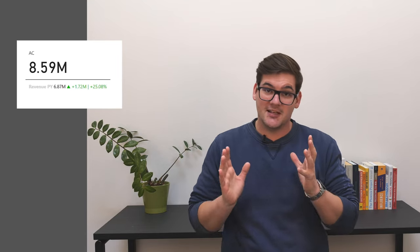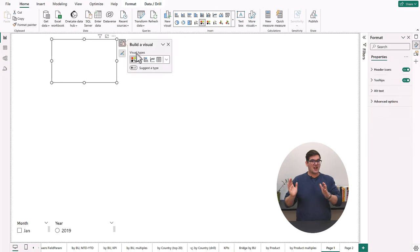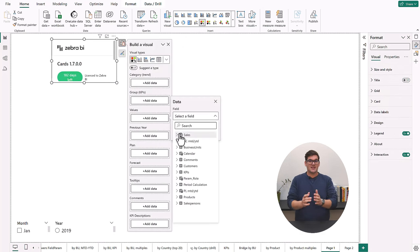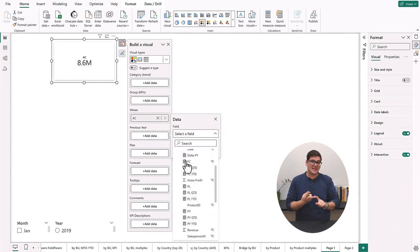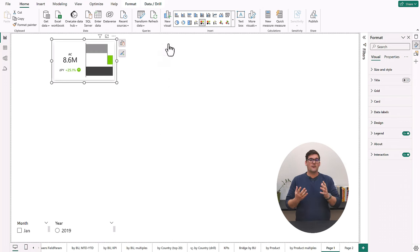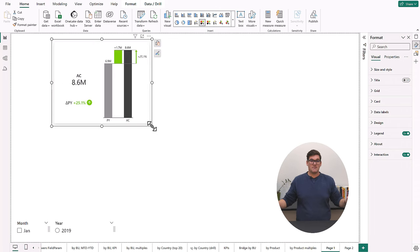So first of all, let me show you how easy it is to create something even better than this with Zebra BI in mere seconds. So first of all, we input our cards, we put in our actual and our previous year measures and bam, that's it. We get a graphical representation and we also get absolute and relative variances for our visual without the use of any other measures. This is done completely automatic and without adding unnecessary measures to your data model.